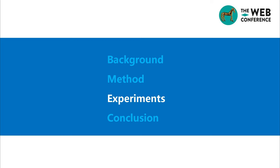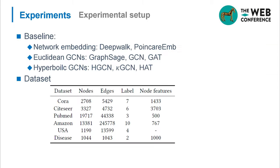To evaluate the effectiveness of our model, we conduct extensive experiments. Here, we choose two network embedding methods, three Euclidean GCNs and three hyperbolic GCNs as our baselines. We also use six datasets in our experiments.